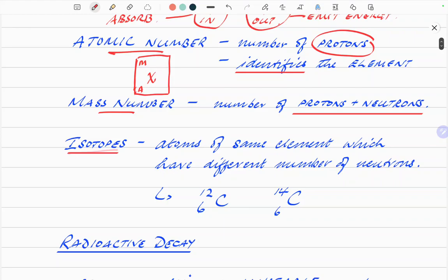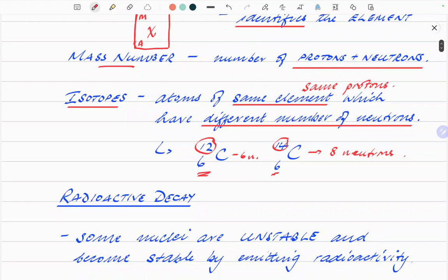Next thing, isotopes. Atoms of the same element, which means has same protons, but have different number of neutrons. For example, carbon-12 and carbon-14. They both have six protons, but carbon-14 has eight neutrons, whereas carbon-12 only has six. That's what is meant by isotopes.